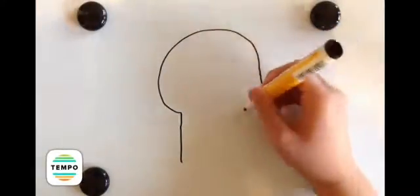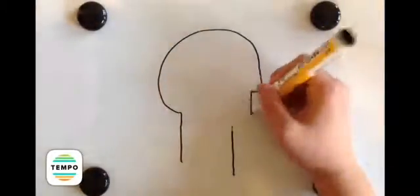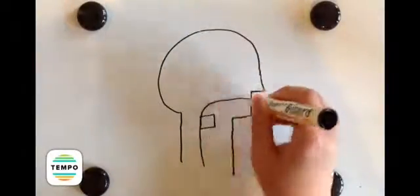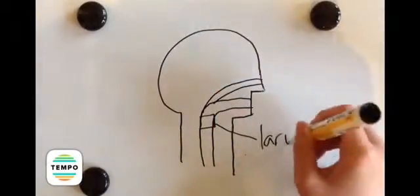The larynx or voice box is located above the trachea, also known as the windpipe. The part of the larynx that produces sound are the vocal folds.